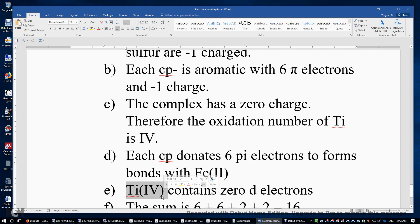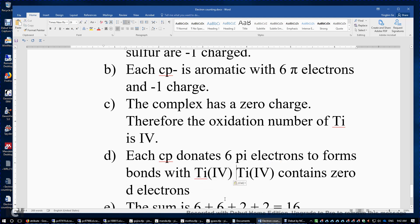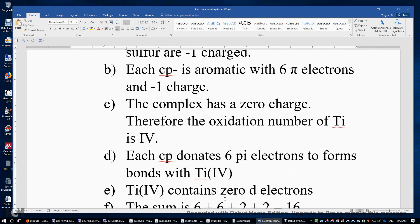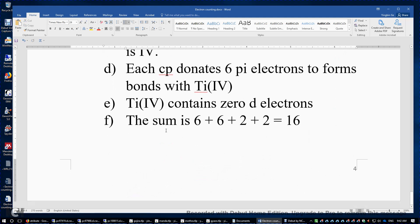Sorry, I copy pasted this from the previous example. And then this titanium(IV) contains 0 d electrons, 0 valence electrons.